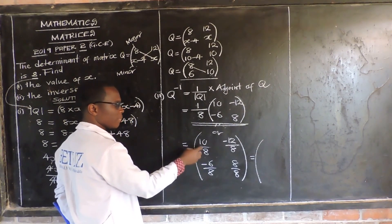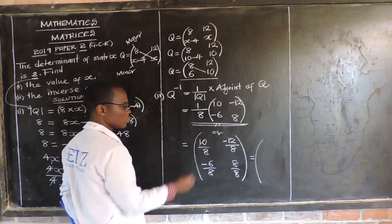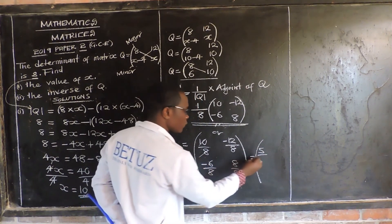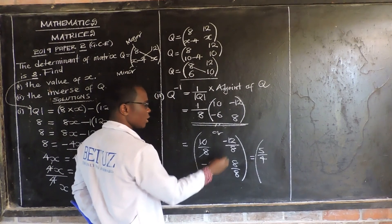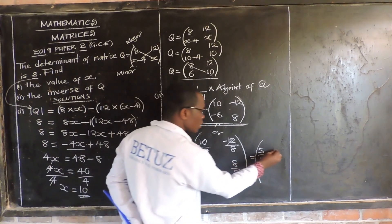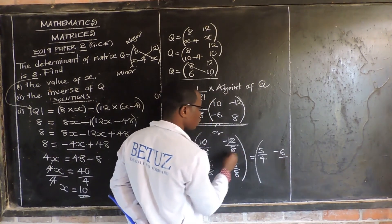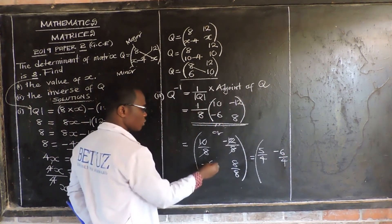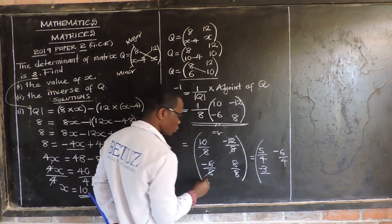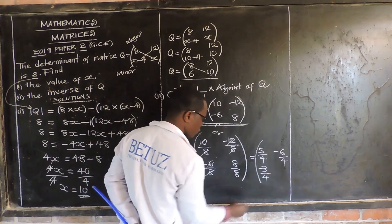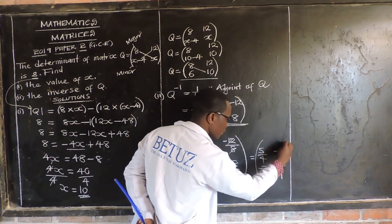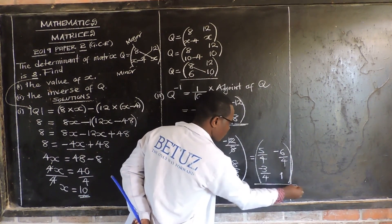We can simplify by taking out a common factor of 2. So: 2 into 10 is 5, 2 into 8 is 4; 2 into negative 12 is negative 6 over 4; 2 into negative 6 is negative 3 over 4; and 8 over 8 is 1. This gives the simplified inverse matrix. You can leave it in either form — both are acceptable answers.